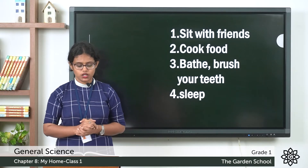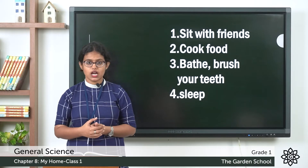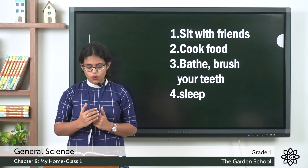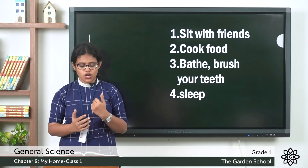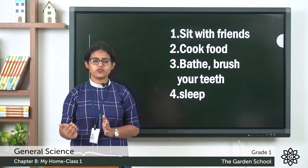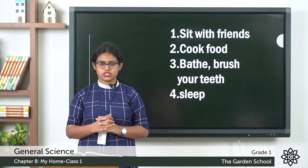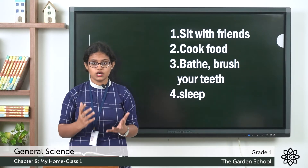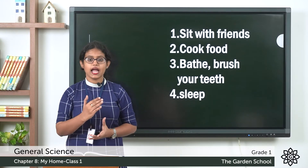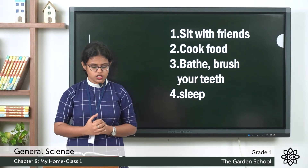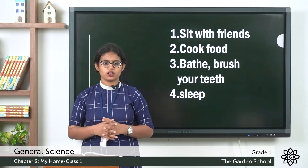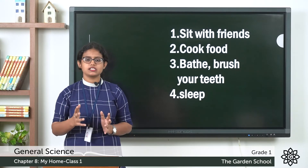Moving on to B — you can see a stove and a cooker, so that is the kitchen where we cook food. Tick 'cook food' from the options. Next — you can see a shower and a tap, so that is the bathroom. From the options — bathe and brush your teeth — tick both, as we do both activities in the bathroom.